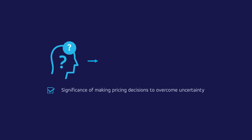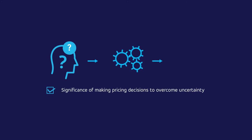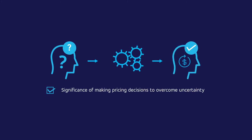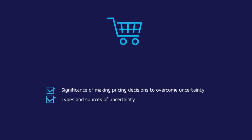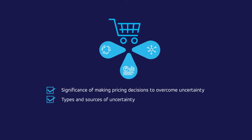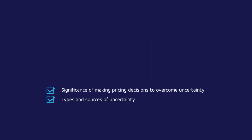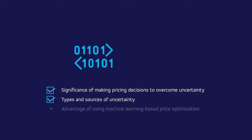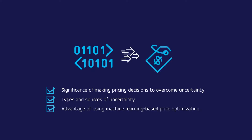In this video, we will learn about the significance of making pricing decisions to overcome uncertainty in the context of the retail industry. We will also look at the types and sources of uncertainty. In conclusion, we'll understand why our machine learning-based solution is a clear improvement over conventional methods for optimizing prices under uncertainty.